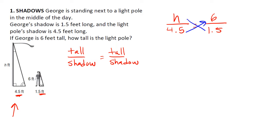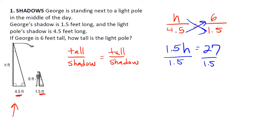Our next step — let's go ahead and cross multiply. So we have 1.5h is equal to 27. We're just solving for h, just like we did in proportions. We divide both sides — 27 divided by 1.5 gives us our flagpole height of 18. Let's go ahead and add our label of feet.